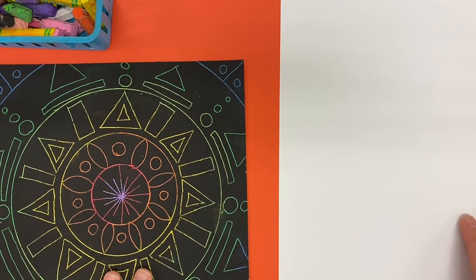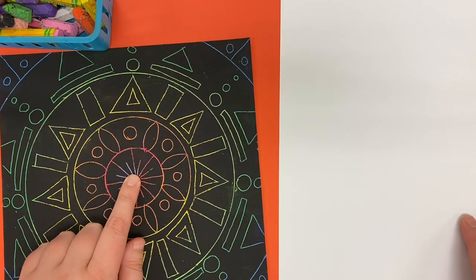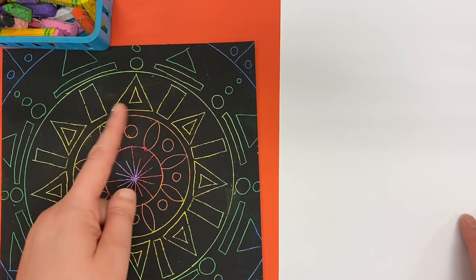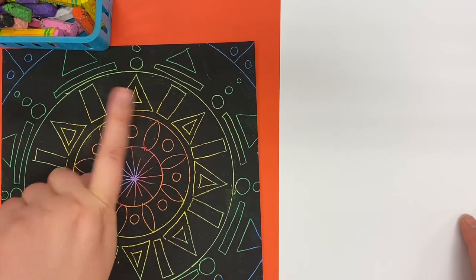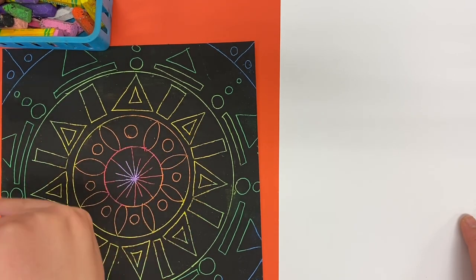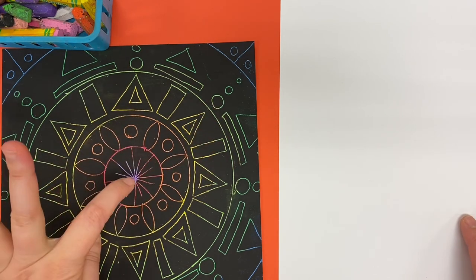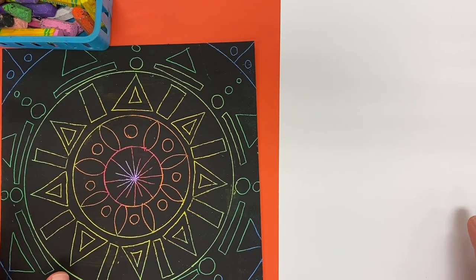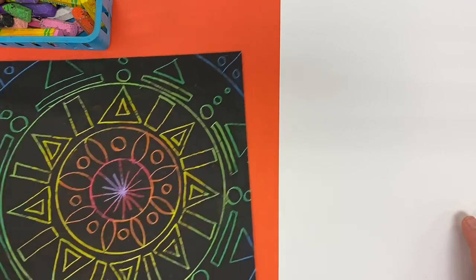We are learning about the principle of design of balance and we're going to be creating artwork that has radial balance, where that symmetry goes all the way around a center point. And we're going to be creating our own scratch art paper for this project.